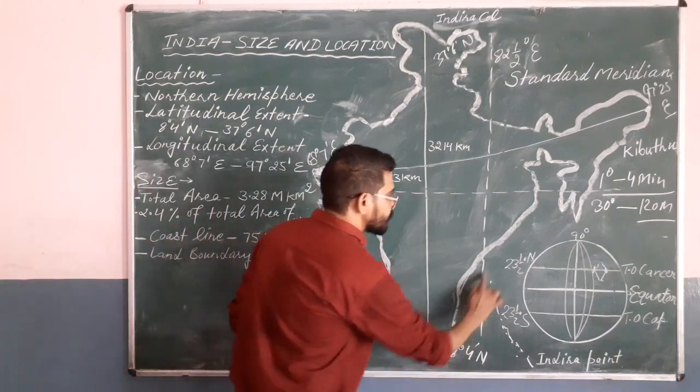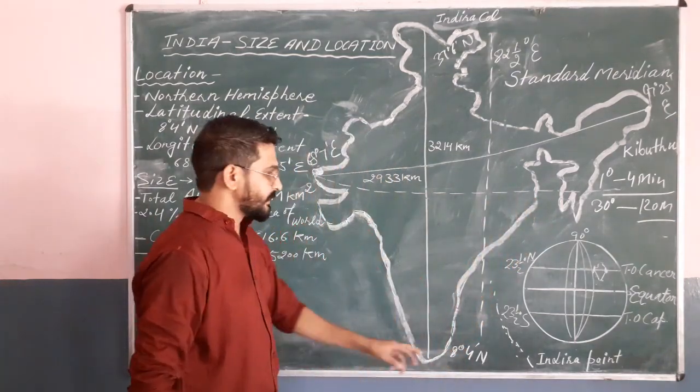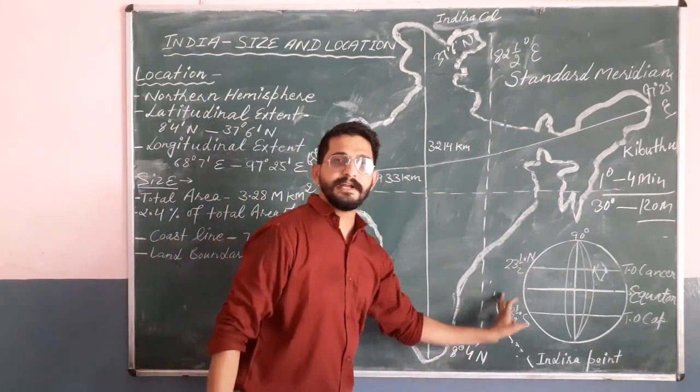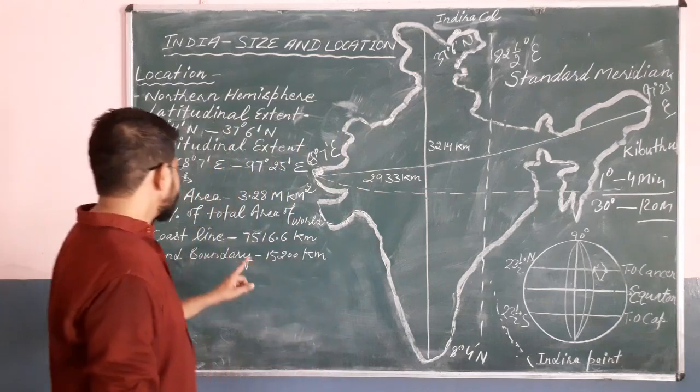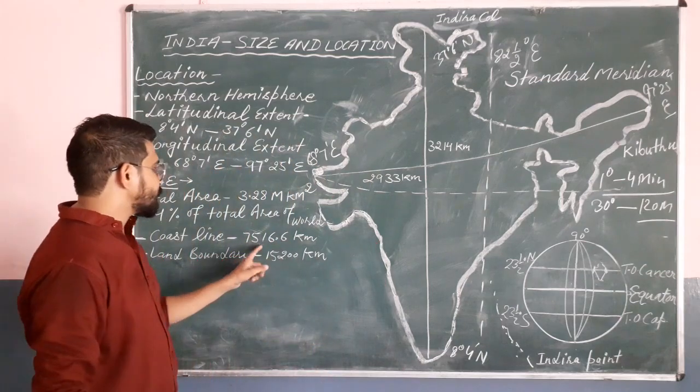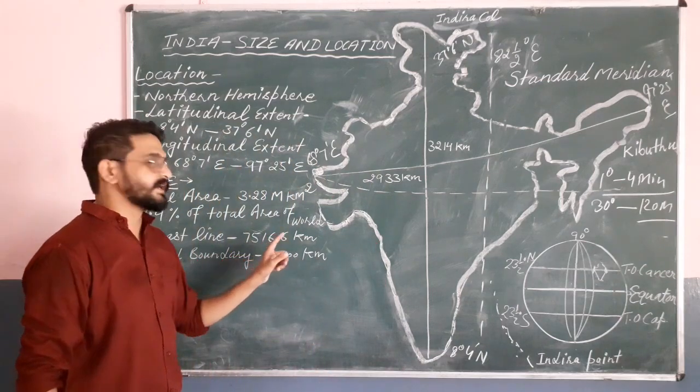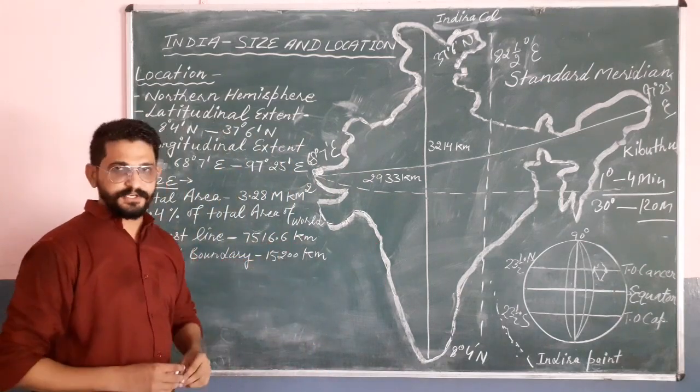India's coastline — that is the coastal areas — including the Andaman and Nicobar Islands, is 7,516.6 kilometers.